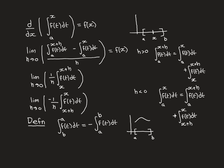Here comes a second new definition for integration that will simplify our notation, meaning we don't have to write the two cases separately. For a function f defined over [a, b], we define the integral of f(t) dt with the bounds written the wrong way — upper boundary at the bottom and lower boundary at the top — to equal the negative of the integral with the bounds written the correct way round.